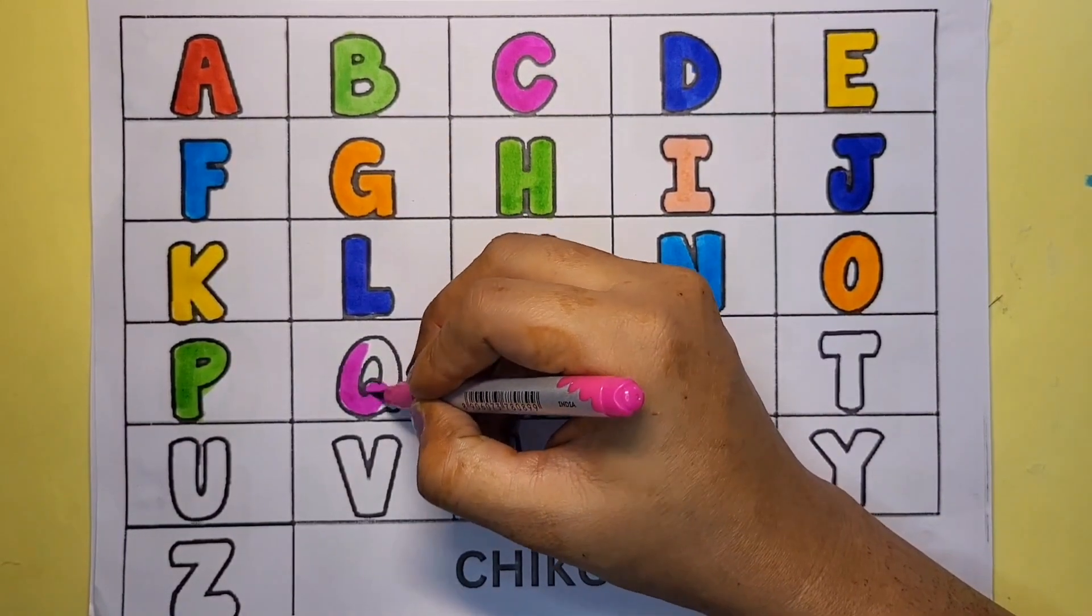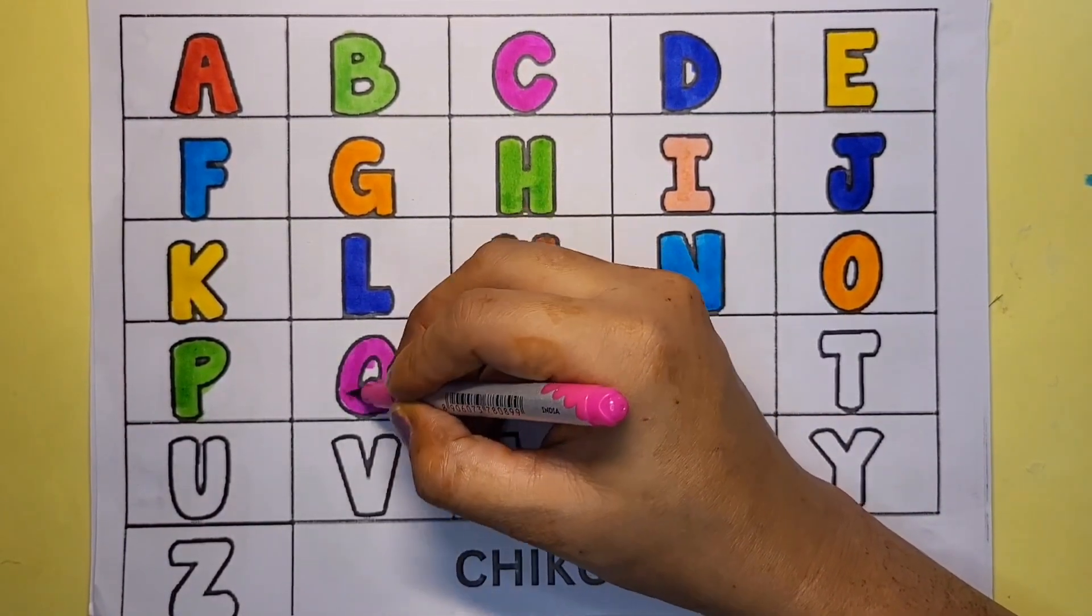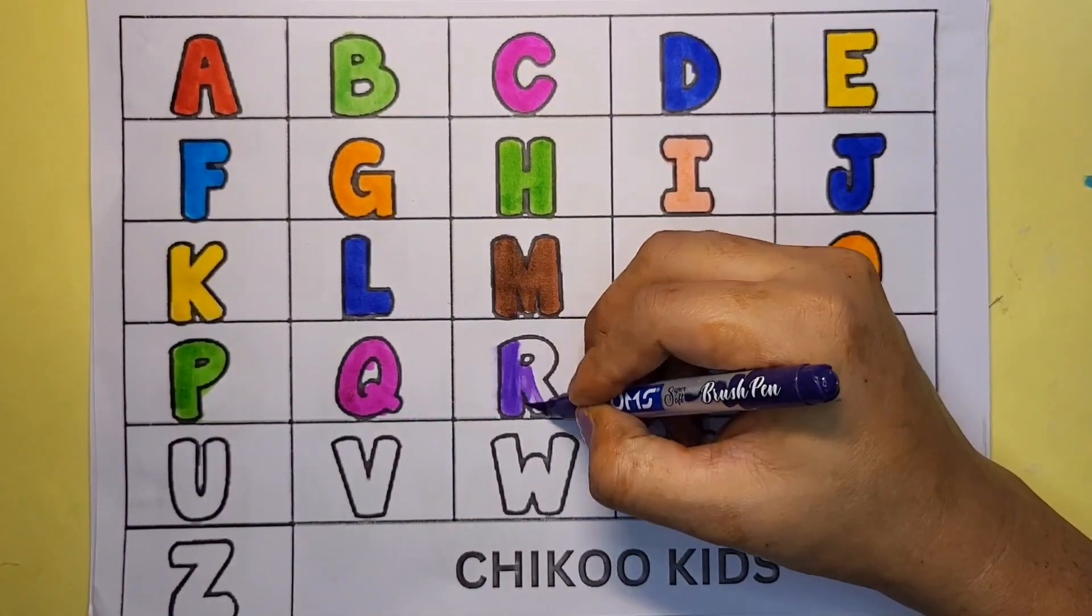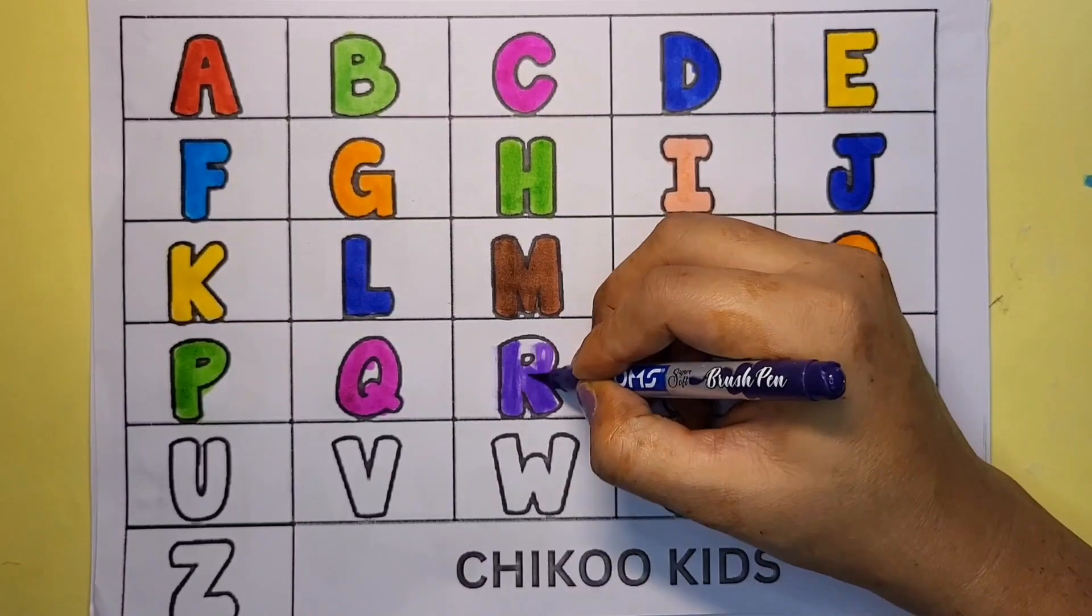Pink color Q. Q for queen. Purple color R. R for rabbit.